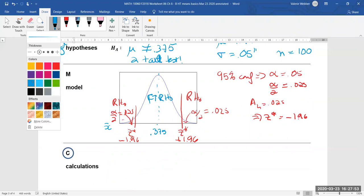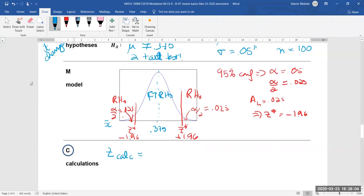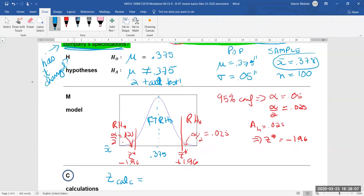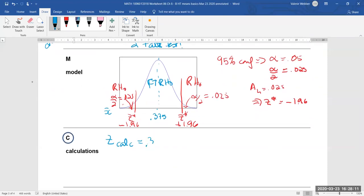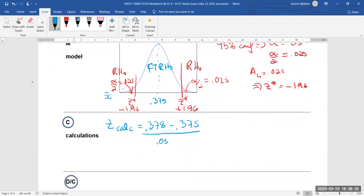And now we can go back and start doing our calculation. So remember, our z-calculated equals our point of interest—remember, the point of interest is your sample mean—so 0.378 minus the population mean or the center, 0.375, divided by σ, and remember σ is 0.05 divided by the square root of 100. And when we calculate that to two decimal places, we get 0.60. So z-calculated equals 0.60.